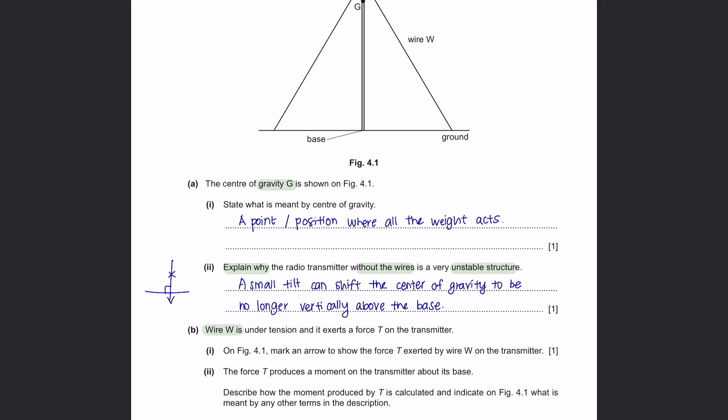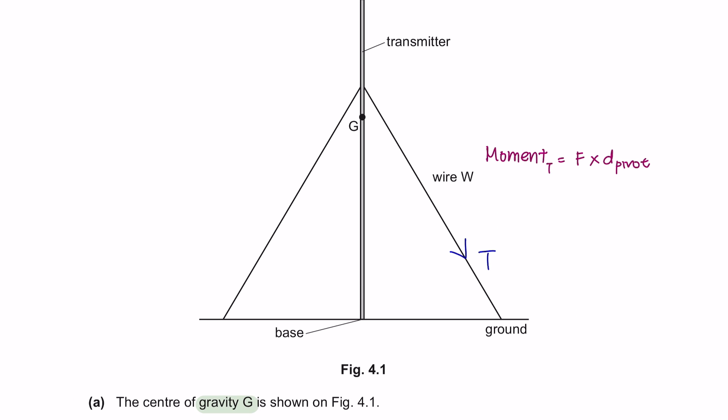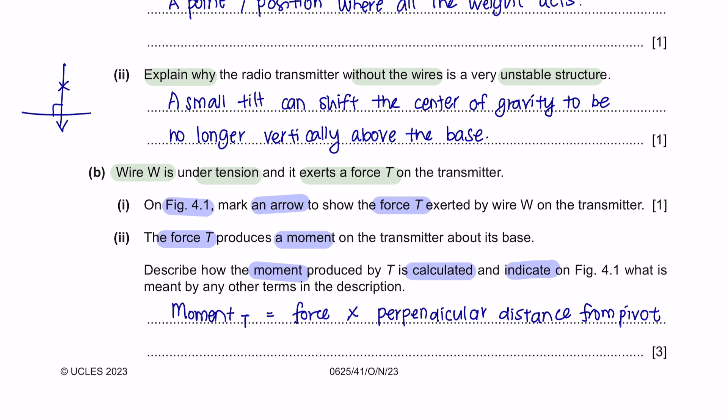Question B. Wire W is under tension. This is wire W. And it exerts a force on the transmitter. Part 1: On figure 4.1, mark an arrow to show the force T exerted by wire W on the transmitter. So, the force which is the tension of the wire will be here. Part 2: The force T produces a moment on the transmitter about its base. Describe how the moment produced by T is calculated and indicate on figure 4.1 what is meant by any other terms in the description. Moment is calculated by the force exerted times by its perpendicular distance from pivot. So, now let's indicate that on figure 4.1. So, the moment calculated by T here would be the force which acts downwards multiplied by the distance from pivot. Don't forget to indicate that on your diagram and have your formula. That's how you'll get a complete 3 marks.